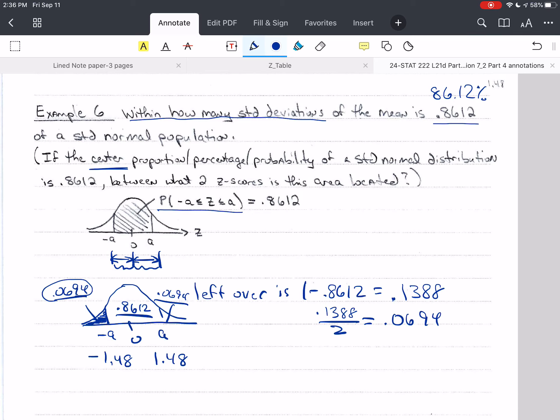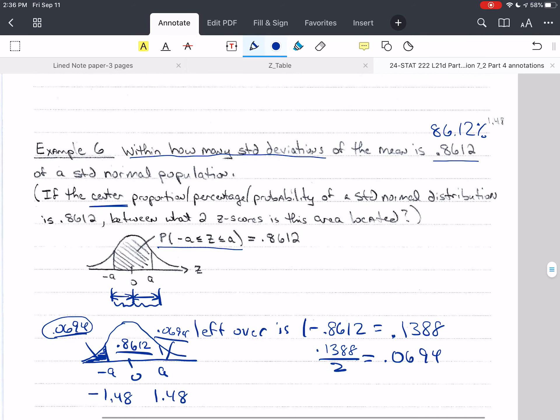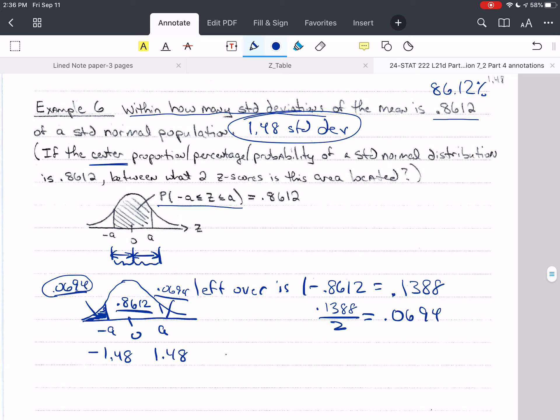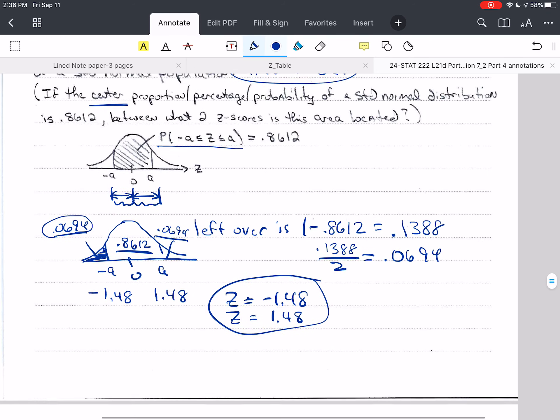So that value is negative 1.48 and this makes this value 1.48. So if I was answering the top question, I'd say 1.48 standard deviations. If I'm answering the second question, I'd say z equals negative 1.48 and z equals positive 1.48. And that would be my answer.